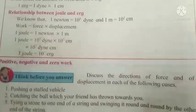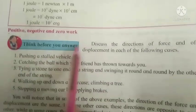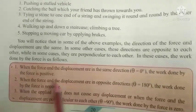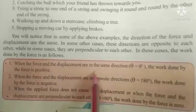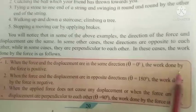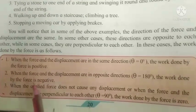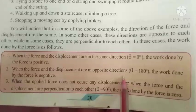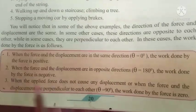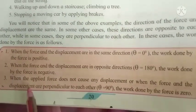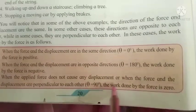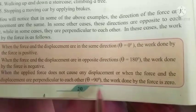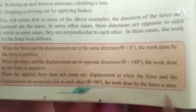What is positive, negative, and zero work? When force and displacement are in the same direction, work done is positive. When force and displacement are in opposite directions, work done is negative. When the applied force does not cause any displacement — that is, when force and displacement are perpendicular to each other — the work done is zero.